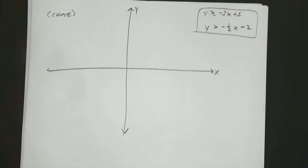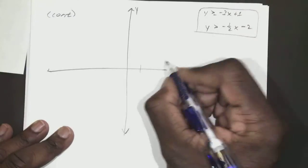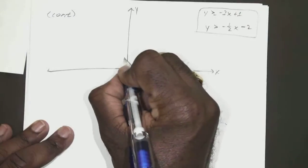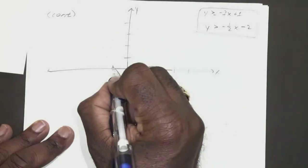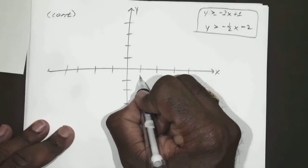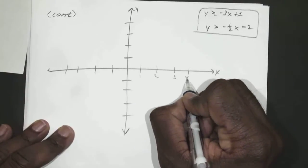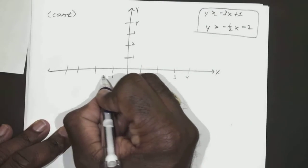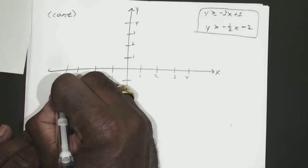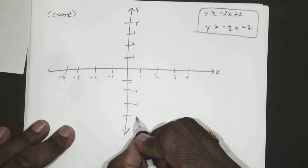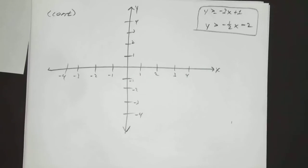Okay. So, if we go back, let's say we have 1, 2, 3, 4. And then 1, 2, 3, 4. Negative 1, negative 2, negative 3, negative 4, negative 1, negative 2, negative 3, and negative 4.